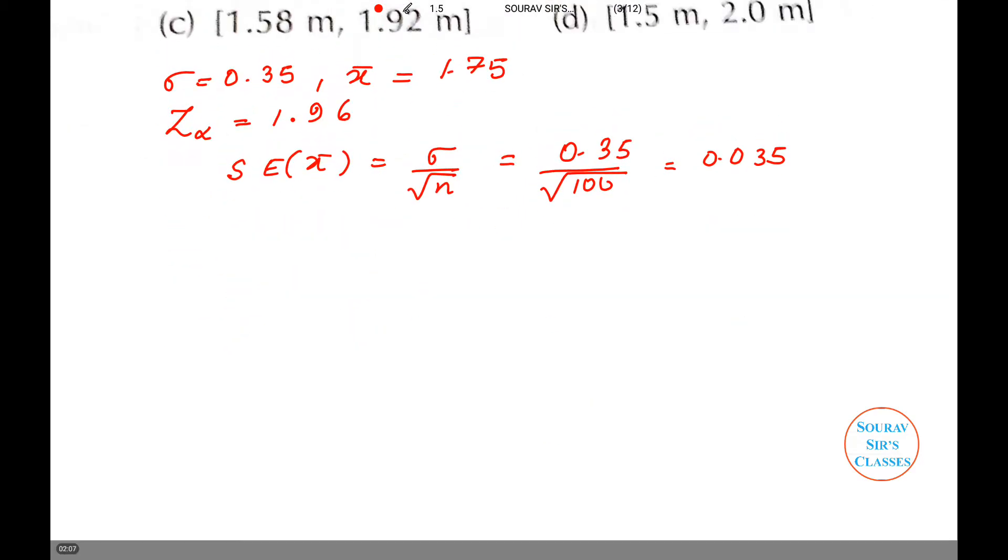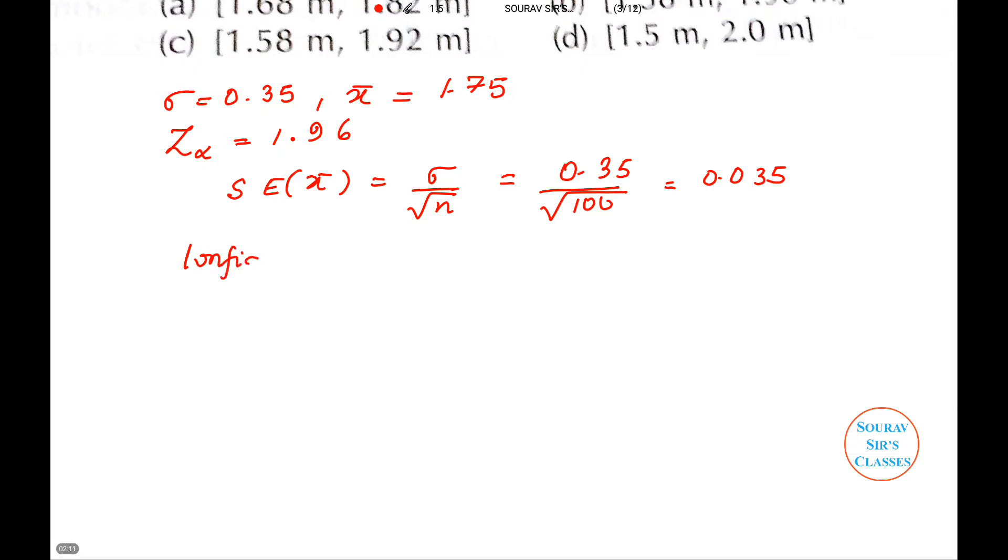Now, the confidence limit is given by: confidence limit equals x̄ plus minus z_α times SE of x̄. This will be 1.75 plus minus, we have received this value to be 0.35 into 1.96.